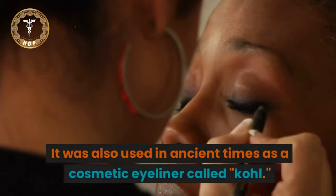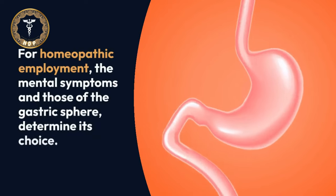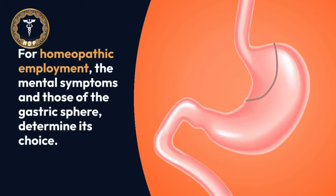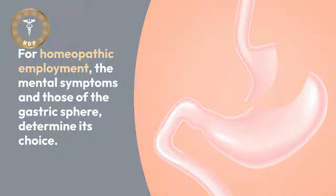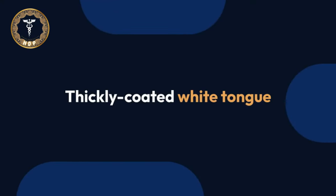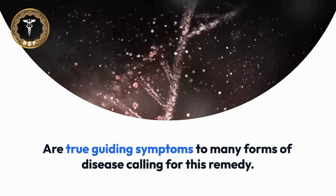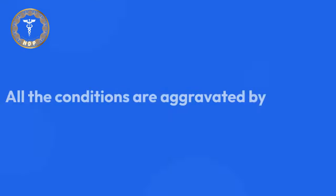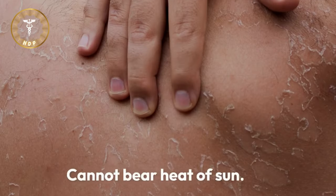In ancient times it was used as a cosmetic eyeliner called kohl. Homeopathic uses — Antimonium Crudum: the mental symptoms and those of the gastric sphere determine its choice. Excessive irritability and fretfulness, thickly coated white tongue are true guiding symptoms to many forms of disease calling for this remedy. All conditions are aggravated by heat and cold bathing.